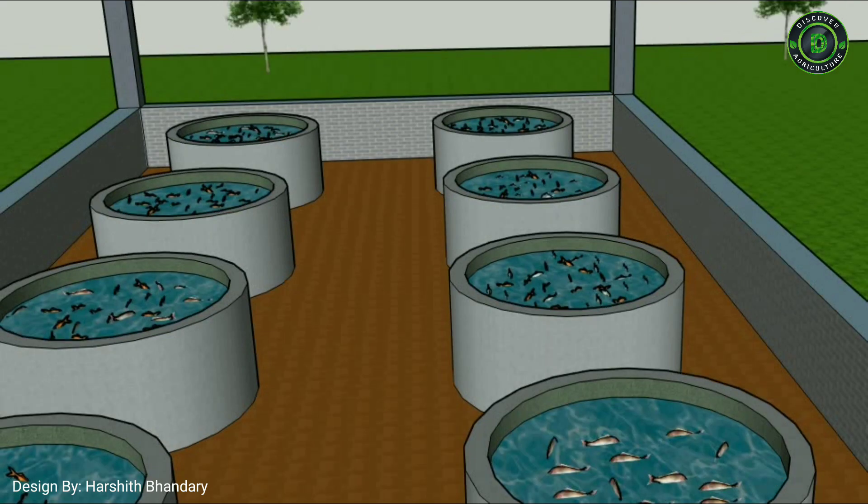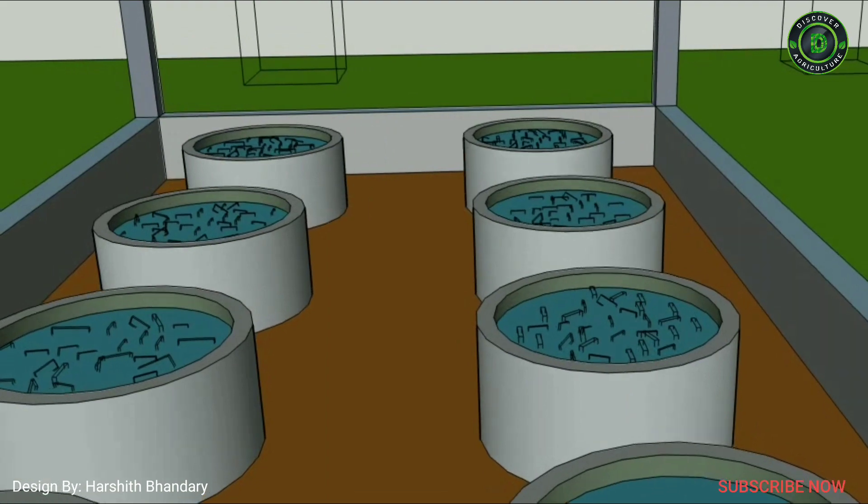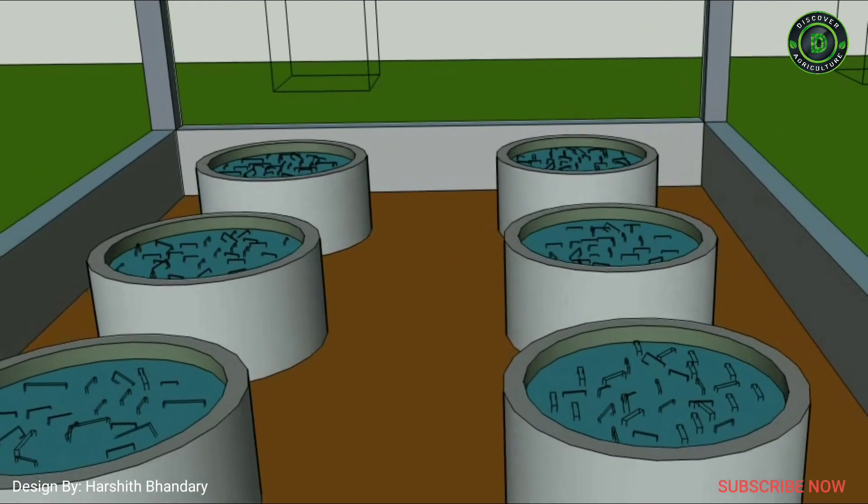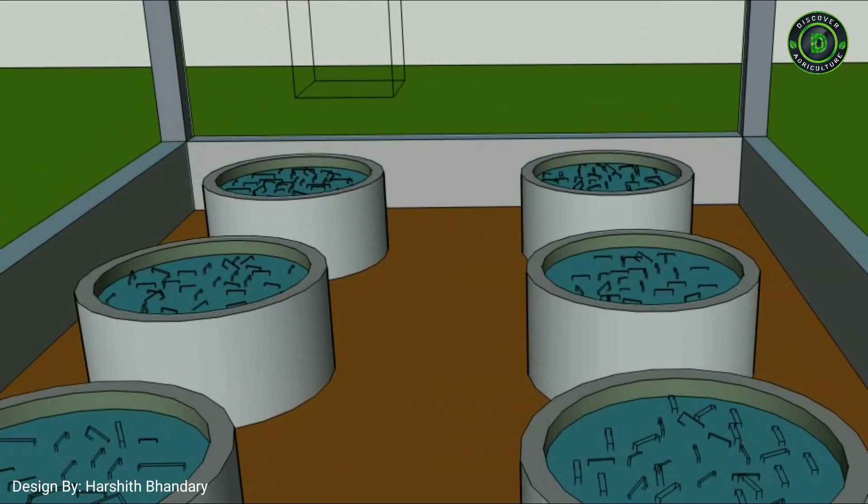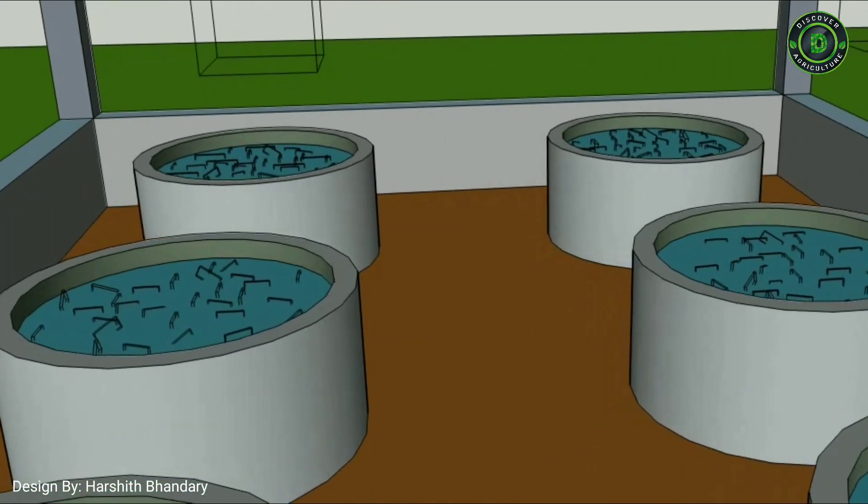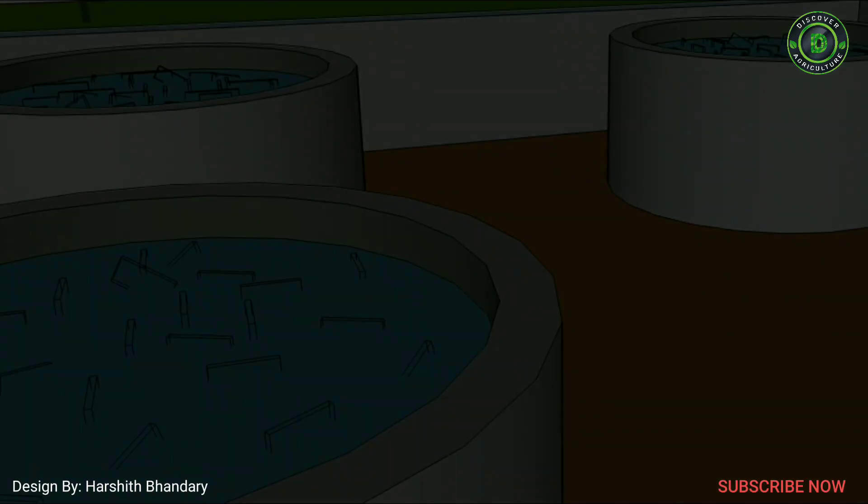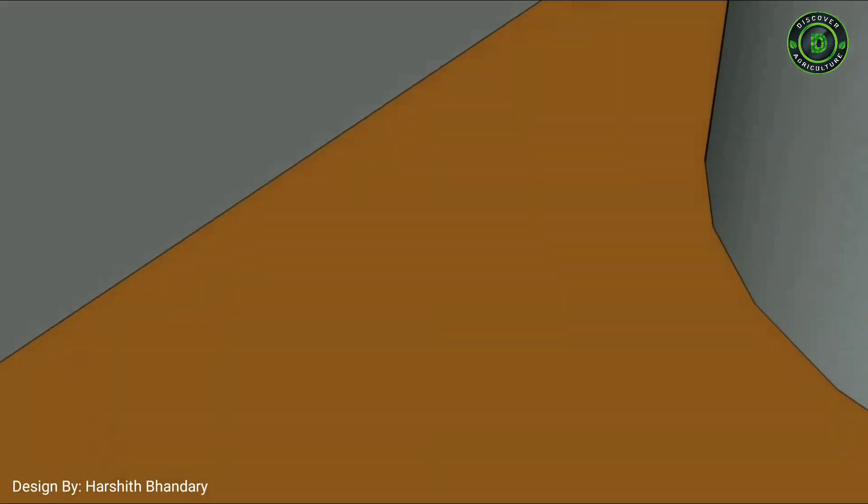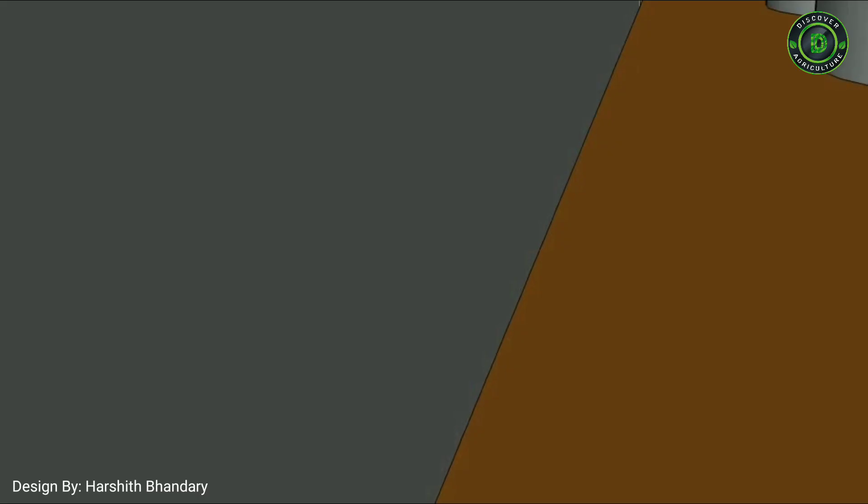Farming shed protects from rain. In rainy season, continuous rain occurs. Due to this, an open biofloc fish culture may be destroyed because of excess rainwater, and the biofloc system takes some time to get back to fully operational. This increases the chances of ammonia buildup in our biofloc tank, and that's why we need a farm shed.